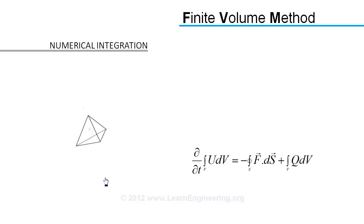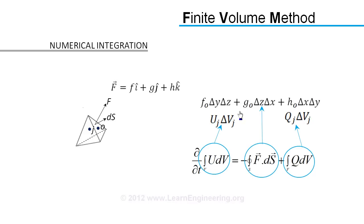In FVM, volume integrals are approximated as volume of cell multiplied by average value of quantity at centroid of cell. Similarly, surface integrals are approximated as midpoint averaged values. So for this cell we have to do the same operation on all four surfaces.